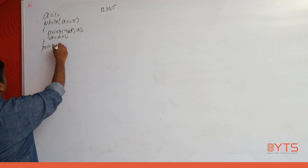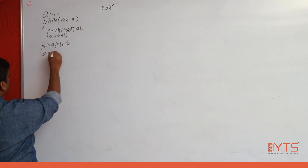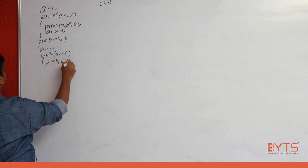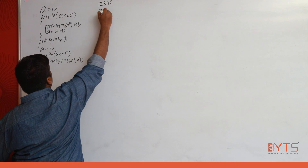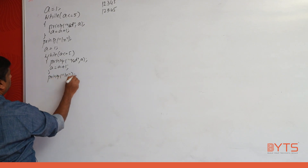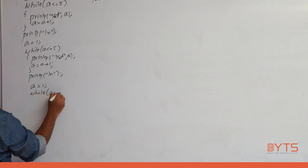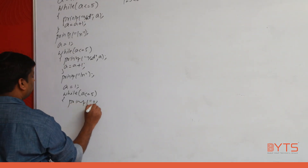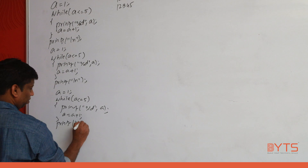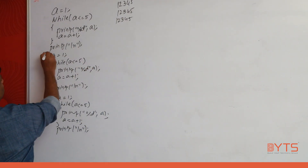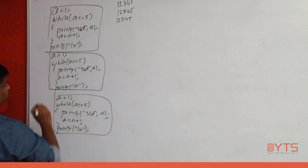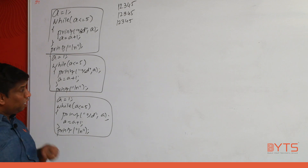Now I come to a new line and want to print 1, 2, 3, 4, 5 again. I write: a = 1, while a <= 5, printf("%d", a), a = a + 1, then printf("\n"). I need to print 1–5 yet again, and the same code repeats. Have you noticed? The same piece of code is written three times.